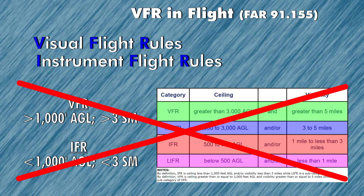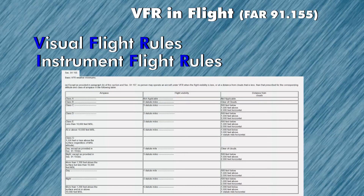In flight, however, to determine whether or not you are VFR, you actually have to look at FAR Part 91.155. This table is an absolute must that you have to memorize, and I think I have just a way to help you memorize it a little bit better.